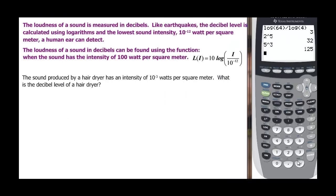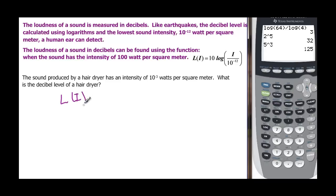Another type of logarithmic application is decibels. Loudness of sound is measured in decibels, and the lowest intensity sound detectable by the human ear is 10 to the negative 12 watts per square meter. The loudness formula is L(I) equals 10 times the log of the intensity divided by 10 to the negative 12. For a hair dryer with intensity 10 to the negative 3 watts per square meter, we set up L(I) equals 10 times the log of 10 to the negative 3 divided by 10 to the negative 12.